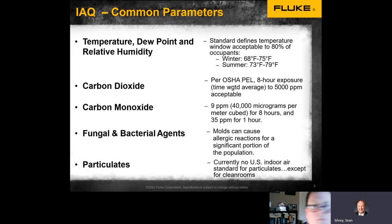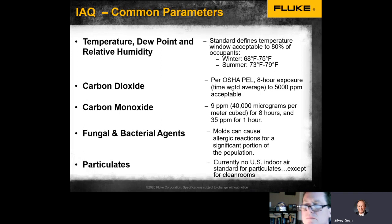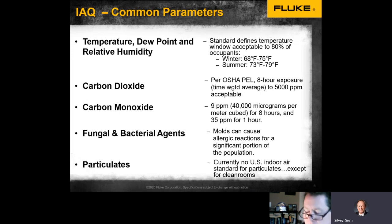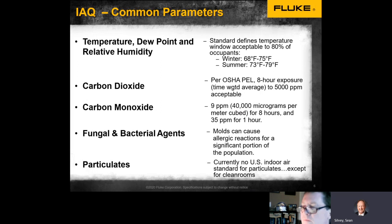For temperature, there are comfort zones for people in a given area. For carbon dioxide, you don't want to be above a certain limit. For carbon monoxide, you typically want zero, but you could have up to nine parts per million over an eight-hour period. Carbon monoxide is the silent killer — we never want that to be very high. There are always fungal and bacterial agents in the air, as well as particulates. On a sunny day in the west, you can see all the particles when sunlight shines through.